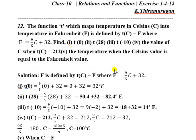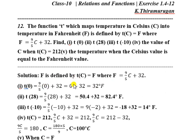So T of C equal to 9 by 5 into C plus 32. For T(0): substituting C equals 0, we get 9 by 5 into 0 plus 32, which equals 0 plus 32, equals 32. So 32 degrees Fahrenheit corresponds to 0 degrees Celsius.